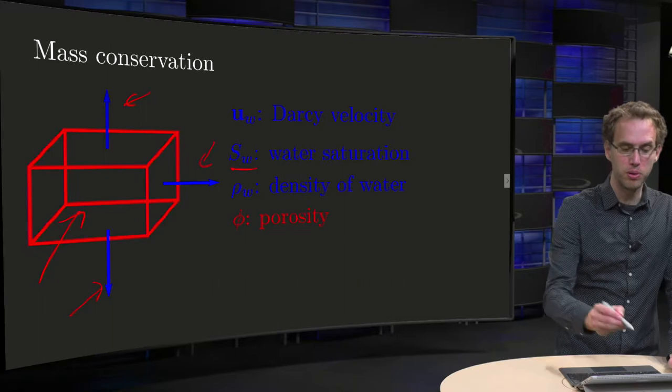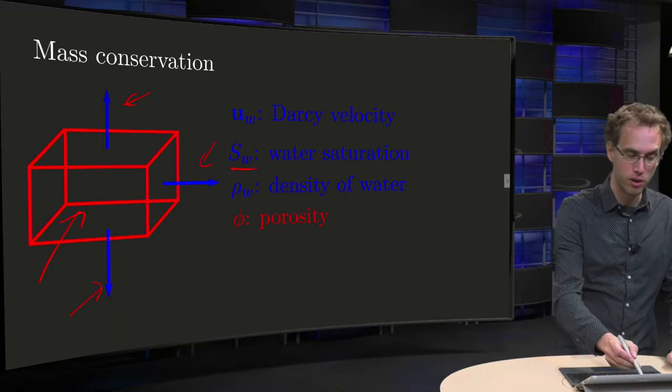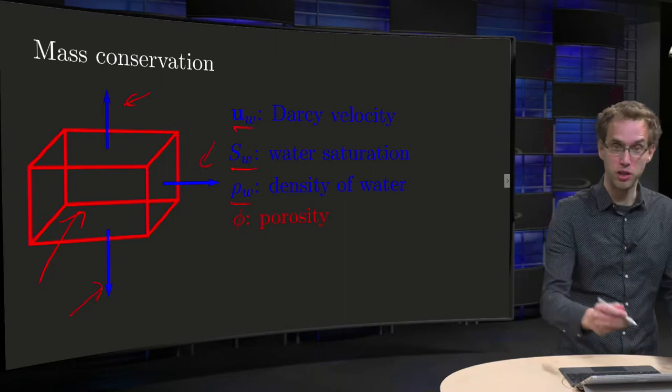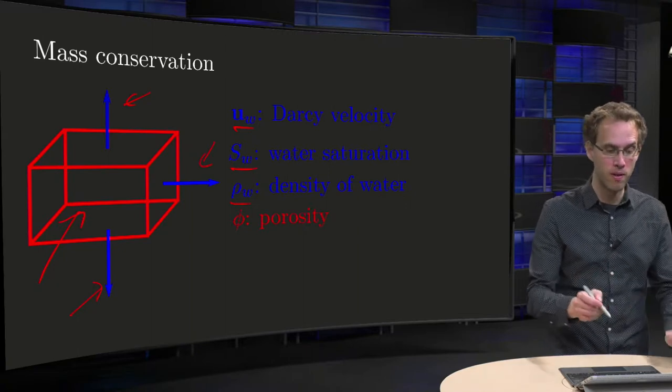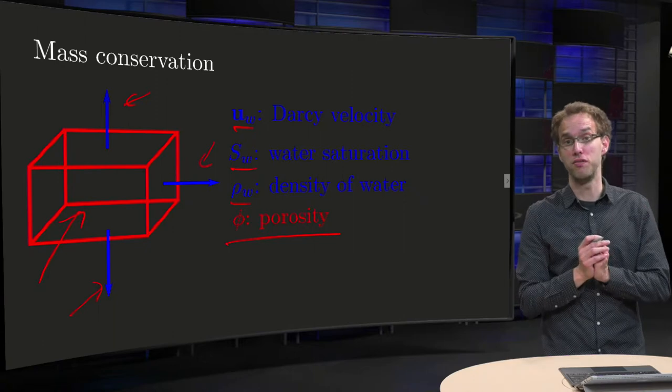Now we call SW the water saturation inside our volume V, ρW the density of water, UW this Darcy volumetric velocity - that's all about the water - and the region V has some porosity φ.